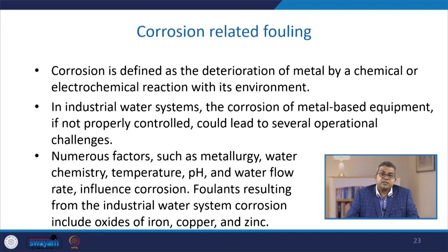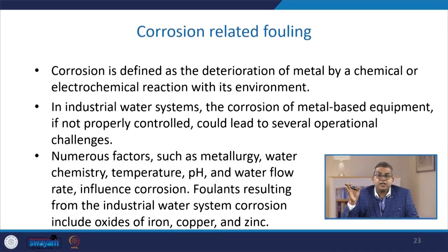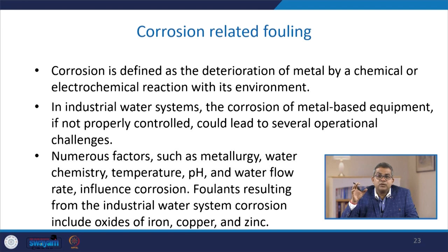In industrial water systems, if corrosion of metal-based equipment is not properly controlled, it may lead to several operational challenges and sometimes serious hazards to safe working conditions. Numerous factors influence corrosion, including metallurgy, water chemistry, temperature, pH, and water flow rate. Foulants resulting from corrosion in industrial water systems include oxides of iron, copper, and zinc.